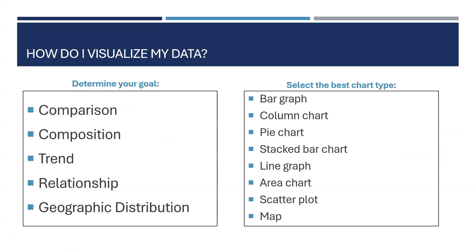Now we're going to talk about how to visualize your data and some visualization strategies for sharing it. You don't just want to dump an Excel file onto your website — you want to share data in a way that people can consume easily and understand quickly. Generally when we talk about data, we have five main goals that help determine what kind of visualization to use: you're either trying to compare, show composition, show a trend, show a relationship, or show geographic distribution. These goals correspond to the most common chart types.